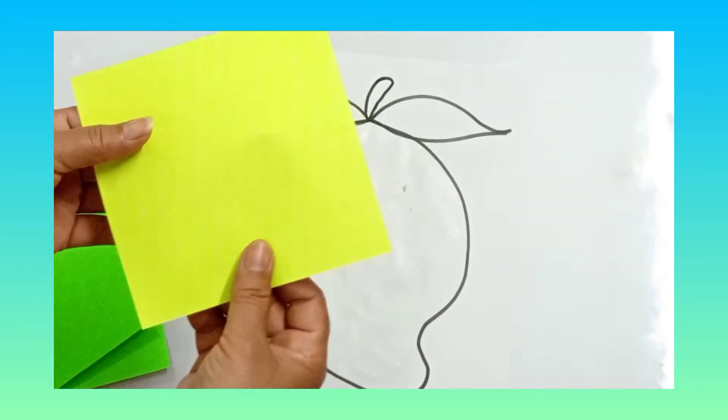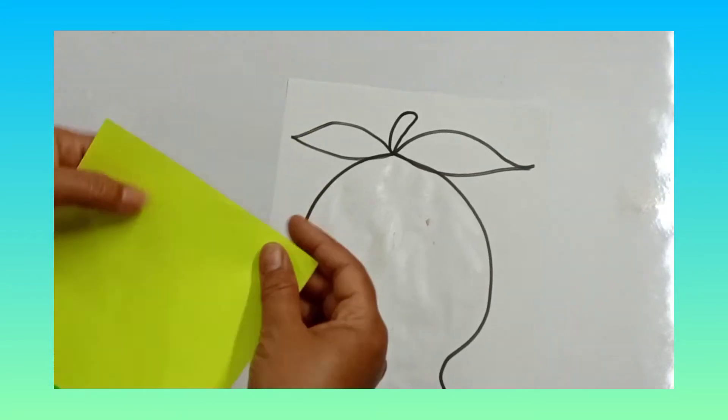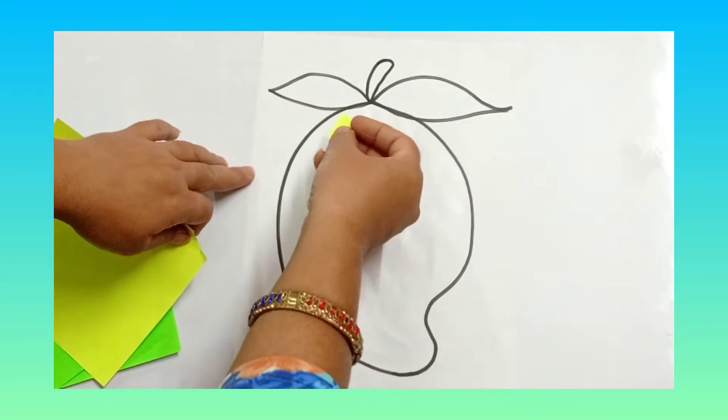Then, you will take yellow piece of paper. What is the color of mango? Yellow. So, we will take yellow piece of paper and start tearing paper.